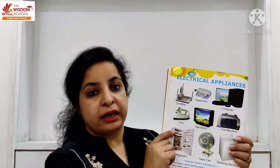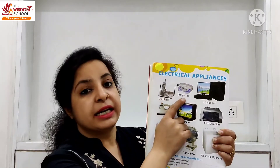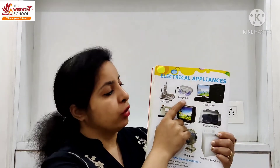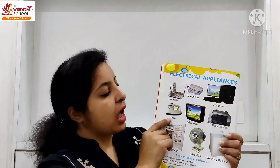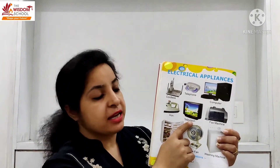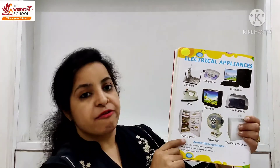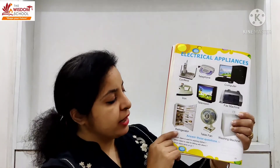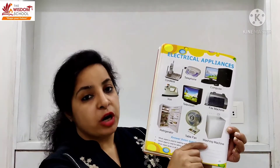Humara topic, electric appliance. Electric appliance — jo cheezein electricity se chalti hain kya kya hain? Cordless (charge karna padta isko), telephone, computer, iron, television, fax machine, refrigerator, table fan, washing machine.